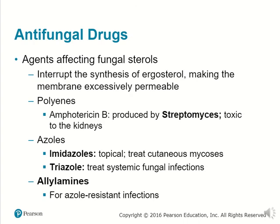In the case of antifungal drugs, agents affecting fungal sterols interrupt the synthesis of ergosterol, making the membrane excessively permeable. There are polyenes such as amphotericin B, produced by streptomycetes, though they are toxic to the kidneys. There are azoles such as imidazoles, topically applied to treat cutaneous mycoses. Triazoles treat systemic fungal infections. There are also allylamines for azole-resistant infections.